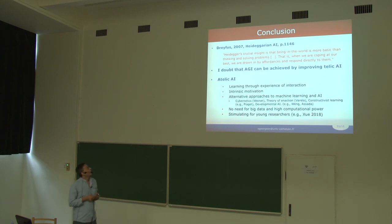So as a conclusion, there are a lot of theoretical arguments to say that we should focus on atelic AI. For example, I can cite Dreyfus here, who has been advocating for Heideggerian approach to artificial intelligence. He said Heidegger's crucial insight is that being in the world is more basic than thinking or solving problems. That is, when we are coping our best, we are drawn in by affordances and respond directly to them. We are not trying to solve a predefined problem. We are just responding to affordances and constructing more and more complex affordances and so on. So I guess my main point is that I doubt that AGI can be achieved just by improving telic AI. I think we need more atelic studies. So that would be my claim today, but of course it's open to discussion.